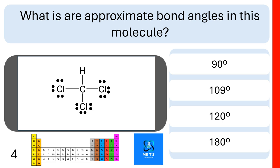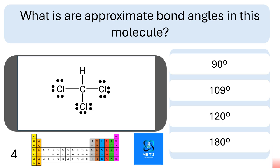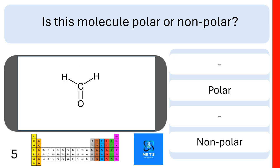Question four: what are the approximate bond angles in this molecule, carbon trichloride hydrogen? Are they 90 degrees, 109 degrees, 120 degrees, or 180 degrees? If you put 109 degrees, you are right.